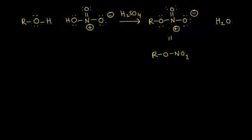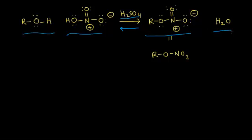Here's the general reaction to form nitrate esters from alcohol. We have our alcohol on the left, and we react that with concentrated nitric acid and concentrated sulfuric acid as our catalyst. This reaction is reversible. We form our nitrate ester on the right, and we also form water in the process. The water molecule comes from the hydrogen on the alcohol and the OH on our nitric acid.